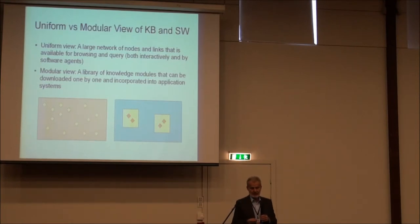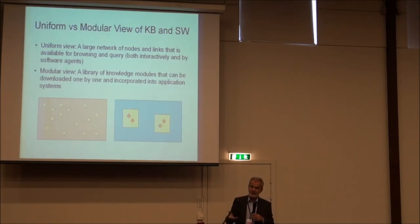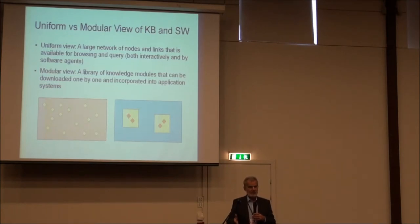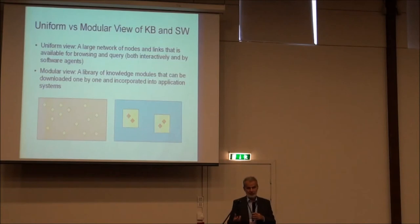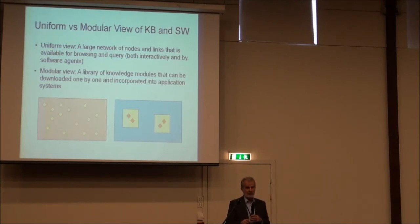To clarify: by the uniform view I mean the view where you say that, at least in the long run and abstractly, we talk about one enormous conceptual network with many nodes and links between them. The alternative, the modular view, is to say it's a library of knowledge modules. Each knowledge module is a little network, or whatever representation you want to use. These modules can be downloaded into application systems, and each application can select which modules it wishes to use. Conversely, some applications will want to contribute modules to the library. I'm not saying everybody should do that — for some purposes, this is the useful way of looking at it.